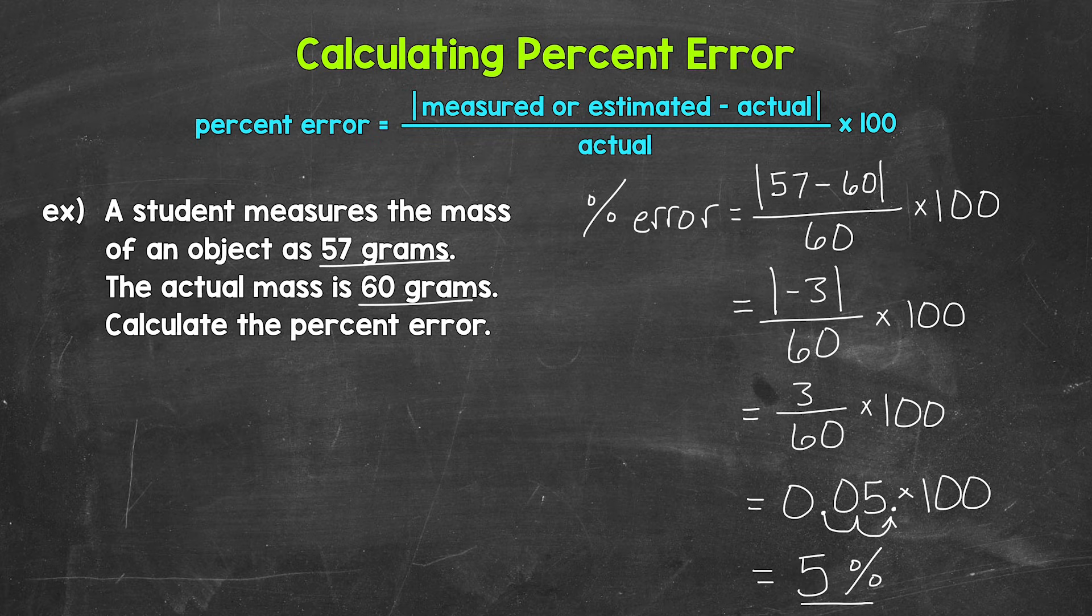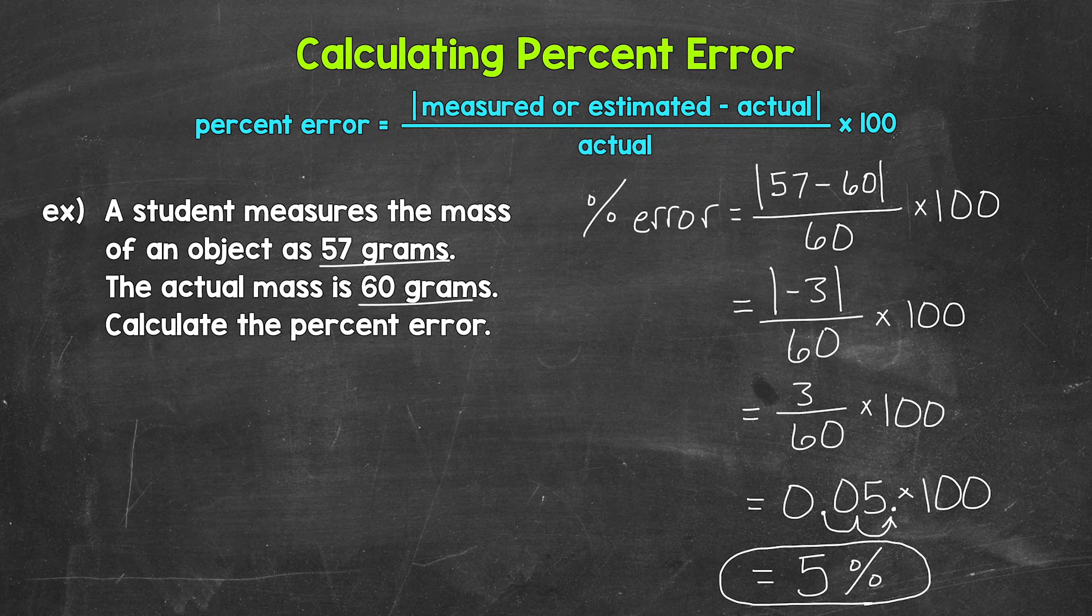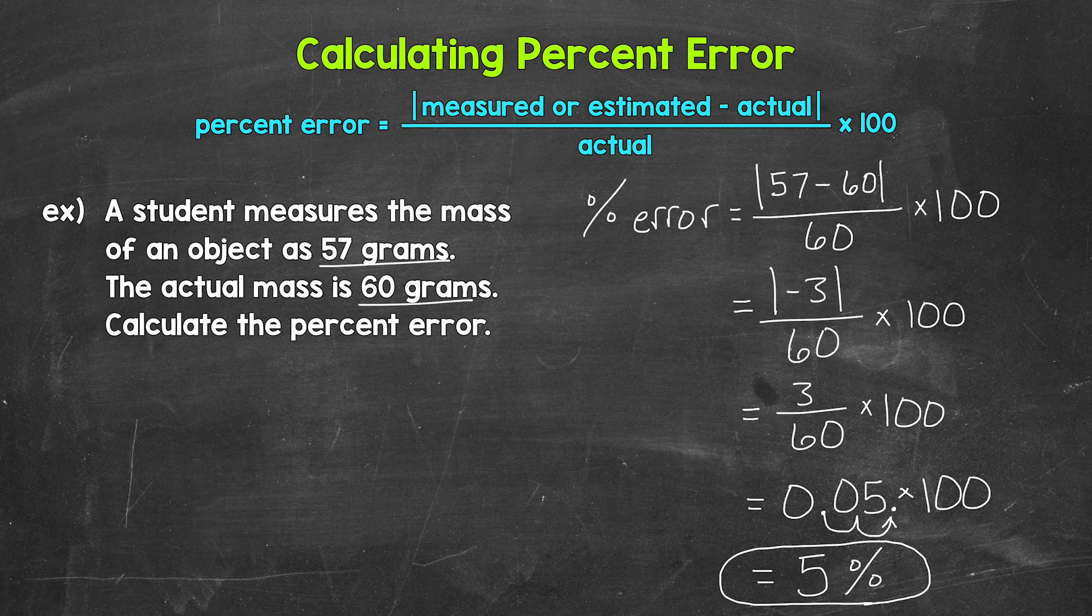So the percent error for this example is 5%. That means that the student's measurement of 57 grams was off of the actual mass of 60 grams by 5%.